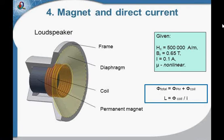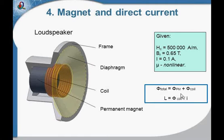By the way, we could be interested in the calculation of the coil inductance. Inductance is the ratio between the magnetic flux and the current. That's the formula. Inductance depends on geometry and the medium magnetic properties, so we should take the frame situation into account, conditioned by the permanent magnets.